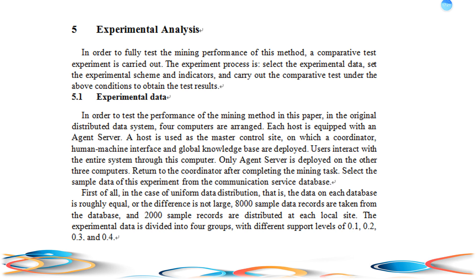Users interact with the entire system through this computer. Only an agent server is deployed on the other three computers, which return to the coordinator after completing the mining task. Sample data is selected from the communication service database. In the case of uniform data distribution, where the data on each database is roughly equal, 8,000 sample data records are taken from the database, and 2,000 sample records are distributed at each local site. The experimental data is divided into four groups, with different support levels of 0.1, 0.2, 0.3, and 0.4.